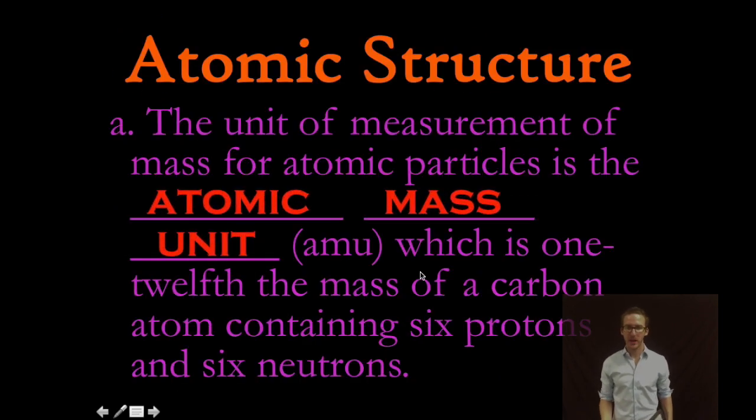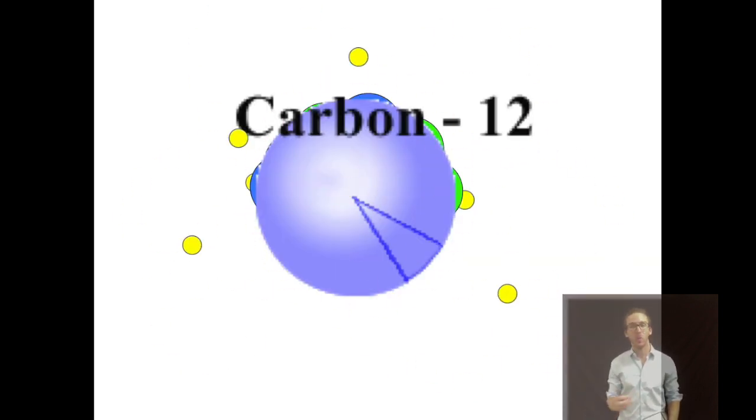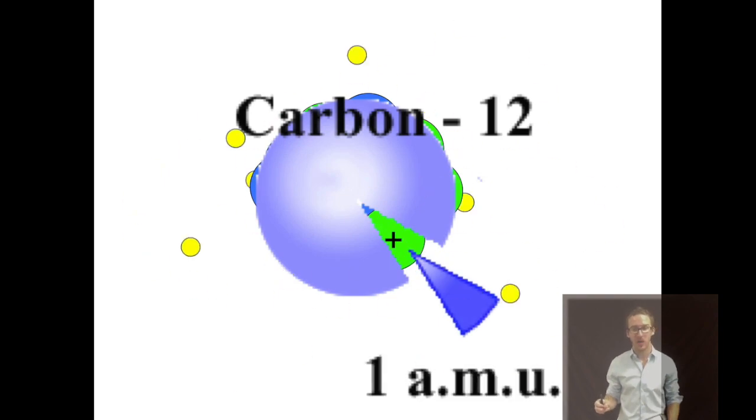Now I've thrown it around a little bit already but you need to recognize that the unit of measurement of mass for atomic particles is the atomic mass units or AMU and that unit is derived from one twelfth of the mass of a carbon 12 atom.